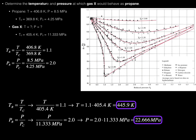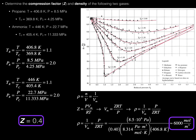In the previous video we did one example problem — kind of two problems together — where we used the principle of corresponding states to calculate the compression factor and the density of two different gases. These two gases behave similarly because the reduced temperature and reduced pressure, 1.1 and 2 respectively for propane, were the same as those for ammonia. Because they have exactly the same reduced temperature and reduced pressure, they behave similarly. We then used those values and a graph to determine the compression factor, and used the compression factor and some data to calculate the density.